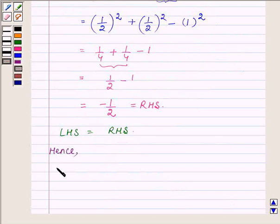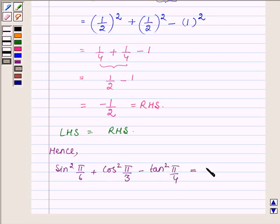we have proved that sin square π upon 6 plus cos square π upon 3 minus tan square π upon 4 is equal to minus half.